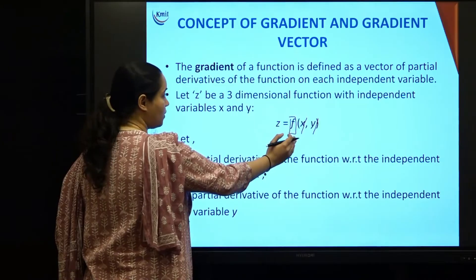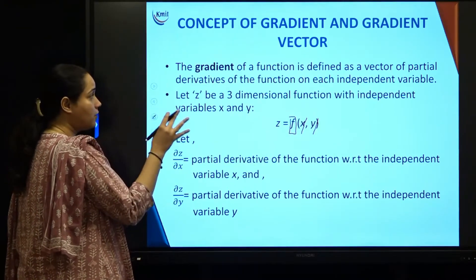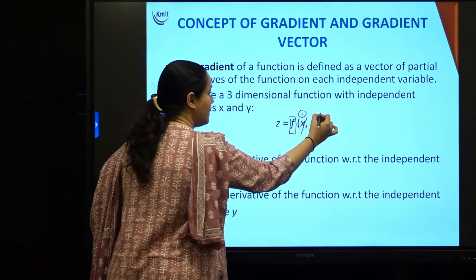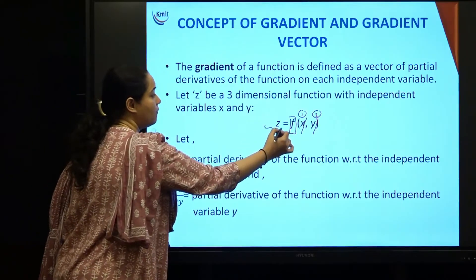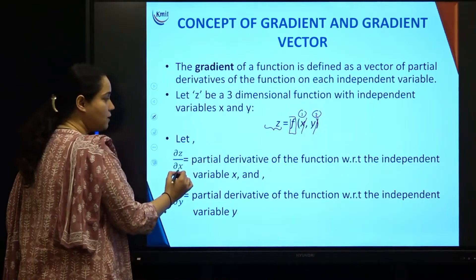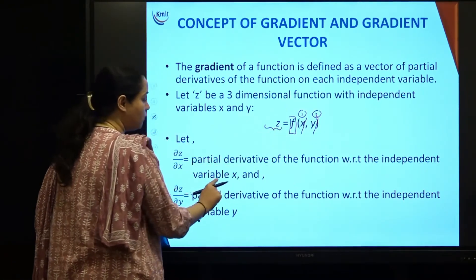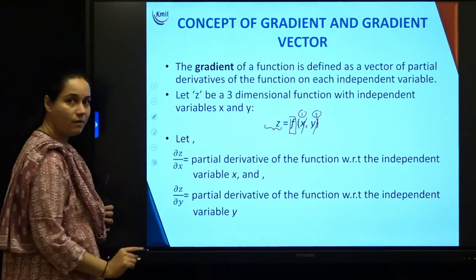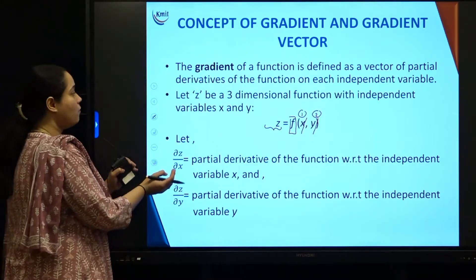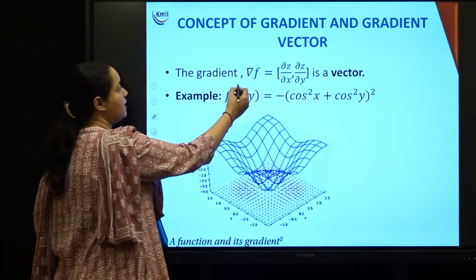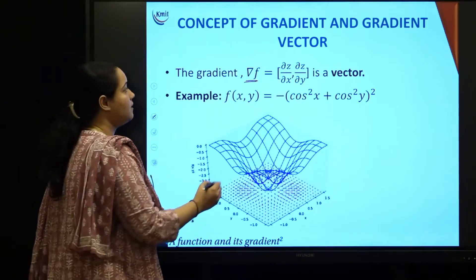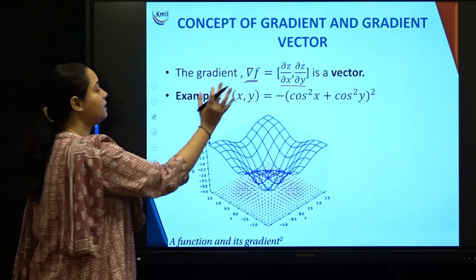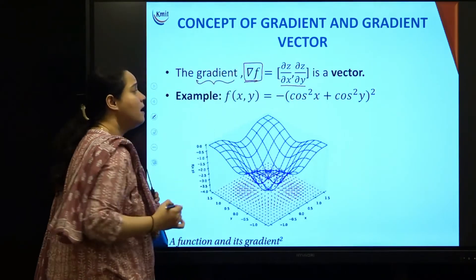This gradient of a function is a vector of partial derivatives with respect to each independent variable. One independent variable is x, the second is y. Calling this function z for ease, ∂z/∂x is the partial derivative with respect to x, and ∂z/∂y is the partial derivative with respect to y. When combined into a vector, we get the gradient, represented as ∇f = [∂z/∂x, ∂z/∂y].